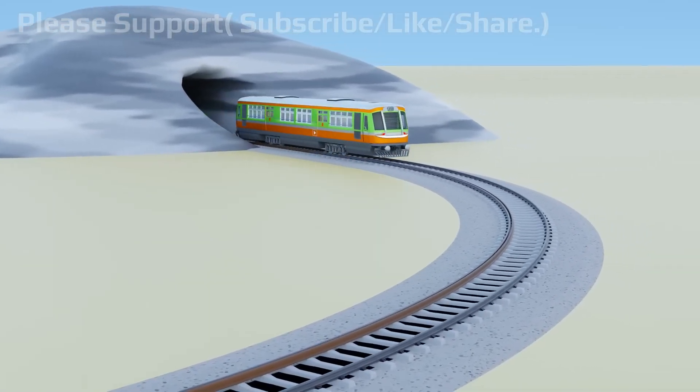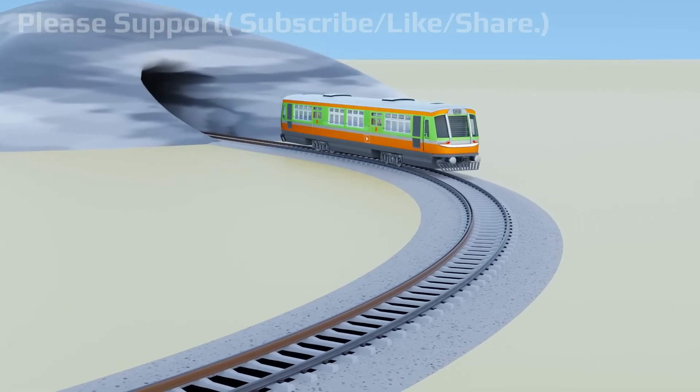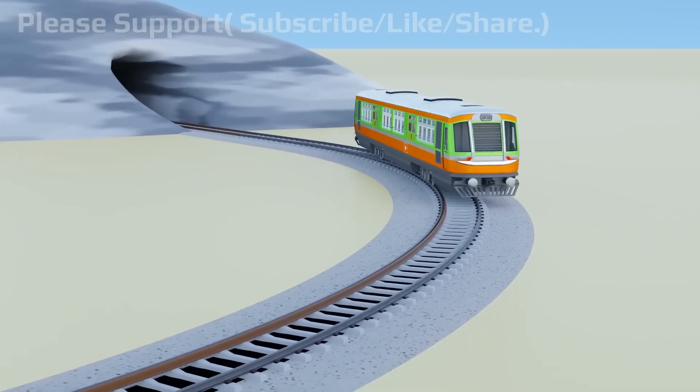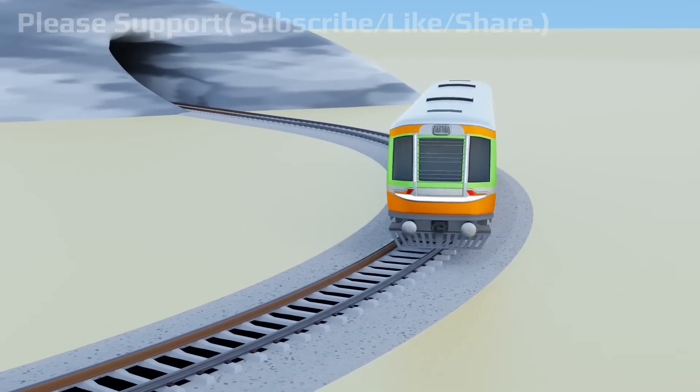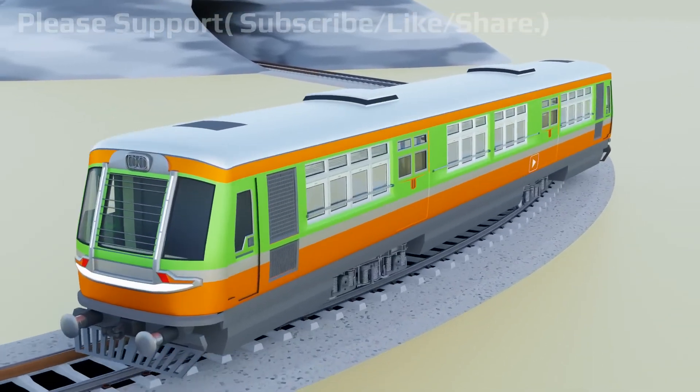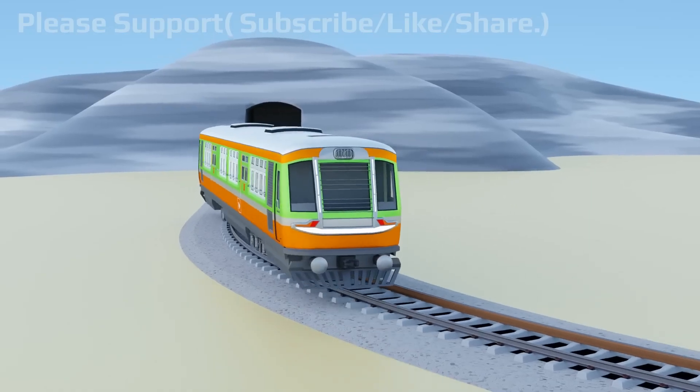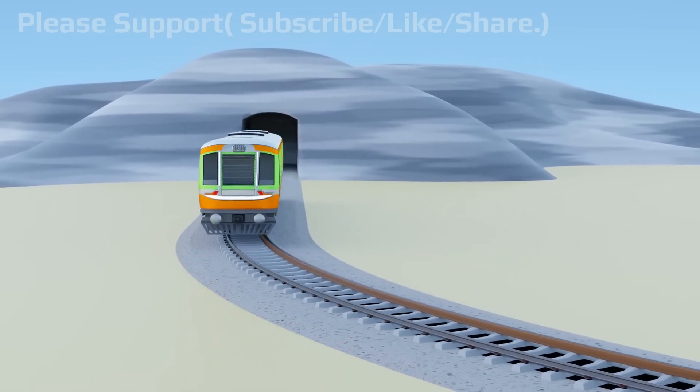Do you know that there is no active steering system on a train? Then how do train wheels follow a curved track? Let's find out in this video. It will be easy to understand with 3D animation.